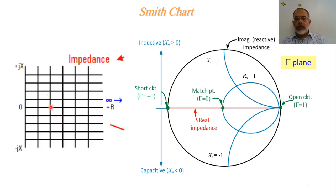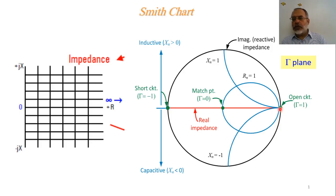Adding a positive reactance maps the reflection coefficient as an upper half circle until it reaches gamma equal unity at X equal infinity. On the other hand, mapping the line where R equals unity and X extends in the negative direction gives a lower half circle, with the end reaching gamma equal 1 when X equals minus infinity. So this vertical line with constant R equal 1 corresponds to a full circle in the gamma plane.